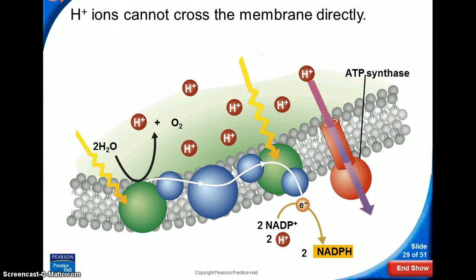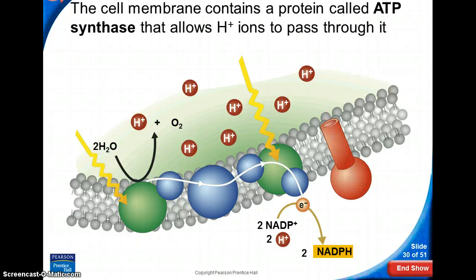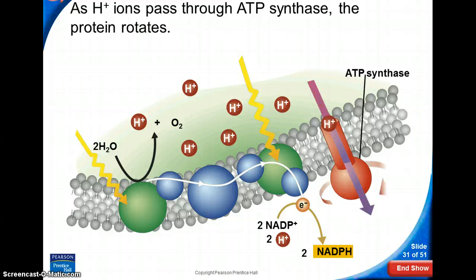And it just so happens that this molecule, ATP synthase, is able to actually open up for hydrogens and move through. And so you see that hydrogen moving through. And as the hydrogen moves through, it starts spinning.